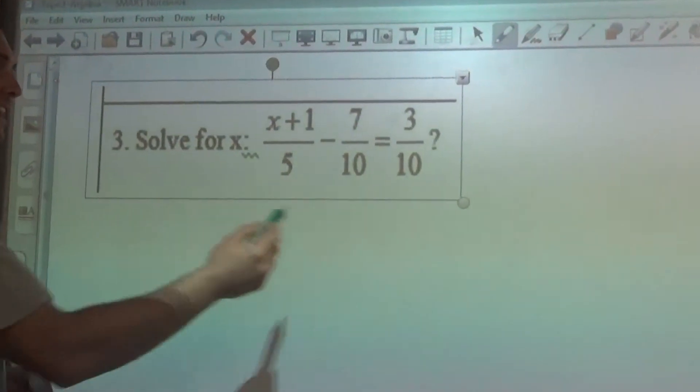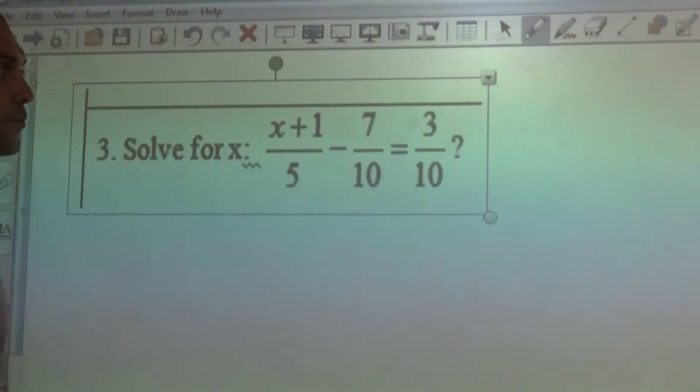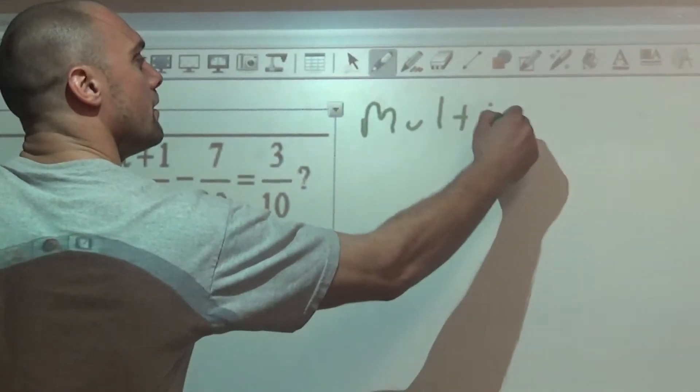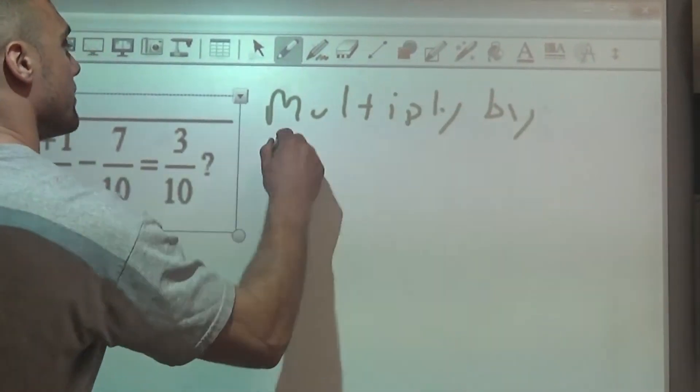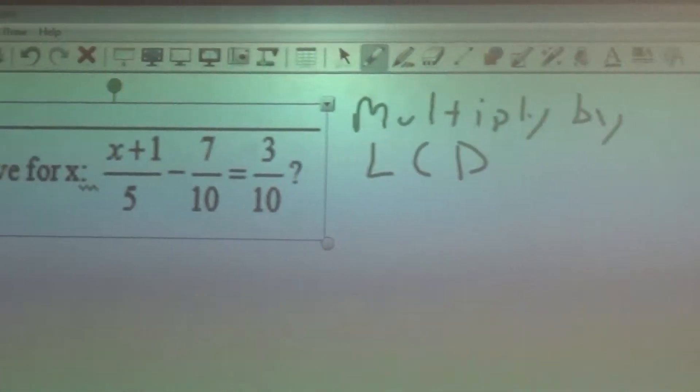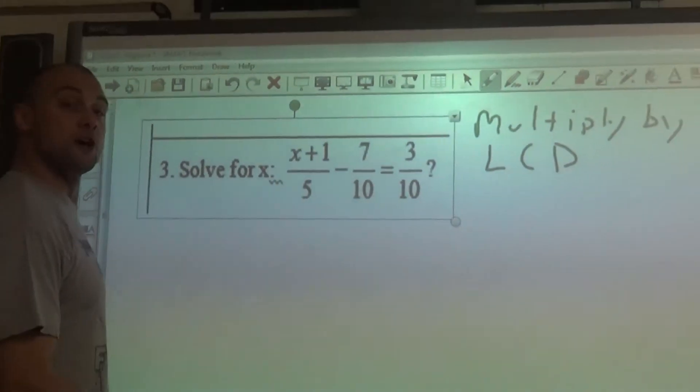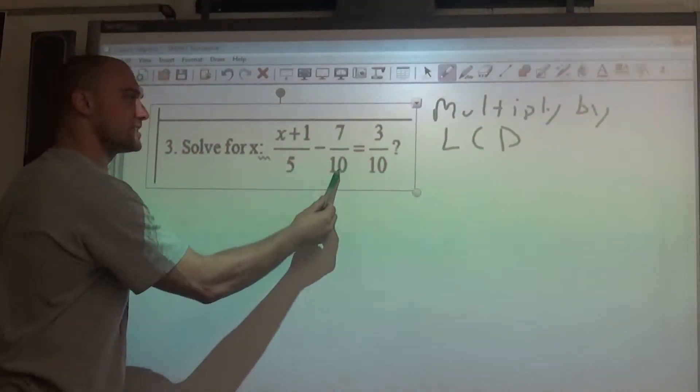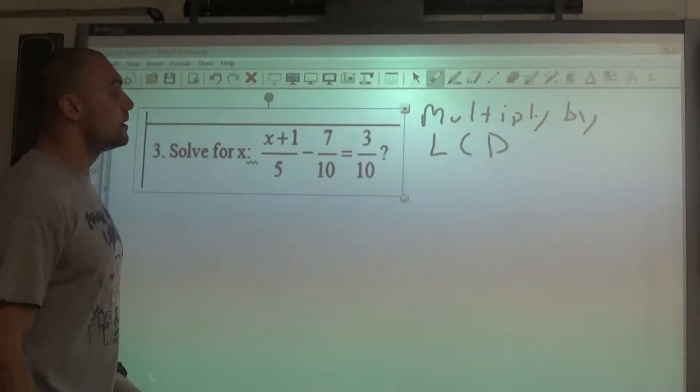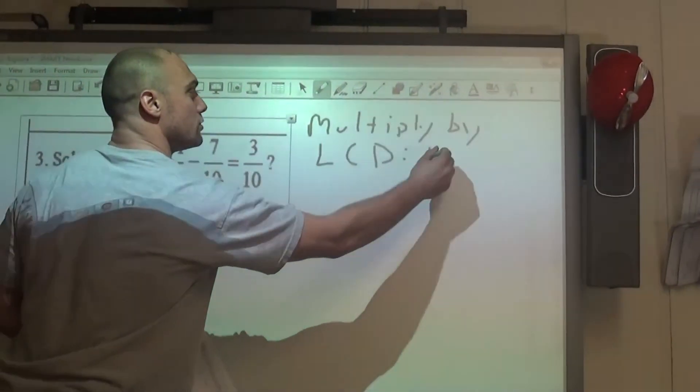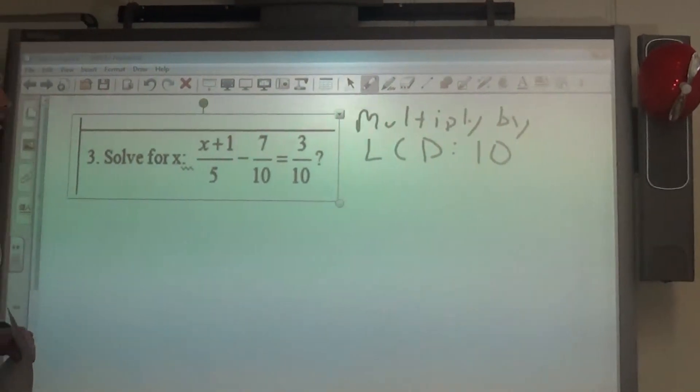Again, we want to get rid of these denominators, and we're going to do that by multiplying by the least common denominator. The least common denominator is the smallest number that 5, 10, and 10 can all be divided into. So in that case, we will have a least common denominator of 10.